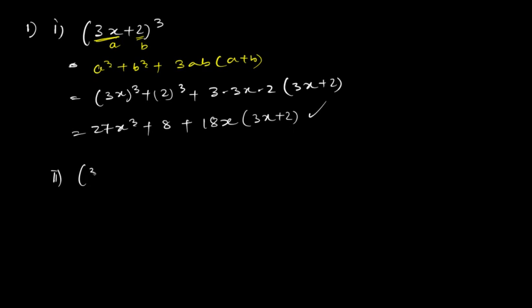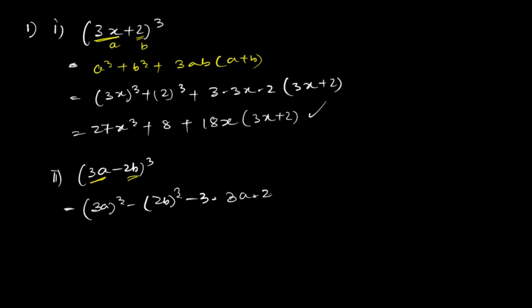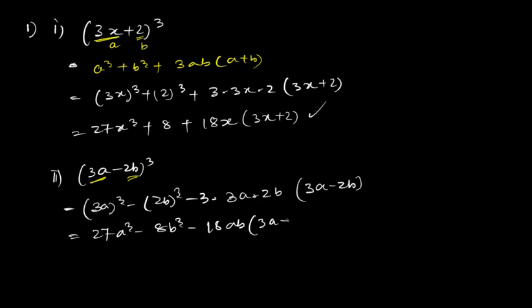The second question is (3a − 2b)³. We use the (a − b)³ formula: (3a)³ − (2b)³ − 3·(3a)·(2b)·(3a − 2b), which gives 27a³ − 8b³ − 18ab(3a − 2b). This is the answer to the second question.